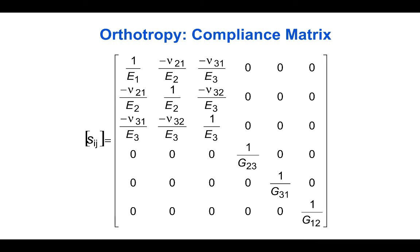The compliance matrix for an orthotropic linearly elastic solid has a similar structure to the isotropic case, except that the Young's moduli are different in each row for the three different axes, the shear moduli are different in rows four, five, and six for the three different planes, and the different Poisson ratios appear in the off-diagonals of the top left block. In total, nine numbers are needed to create the compliance or stiffness matrix for an orthotropic solid material.